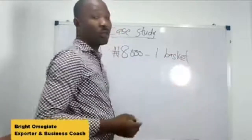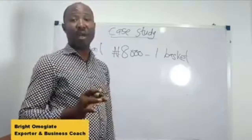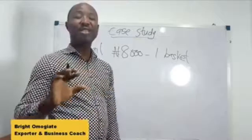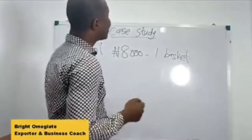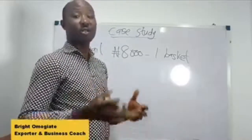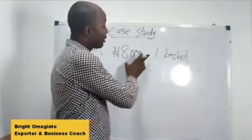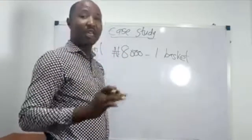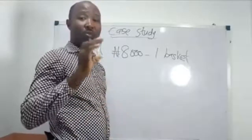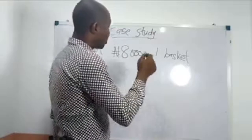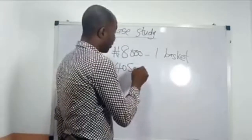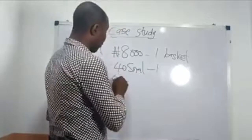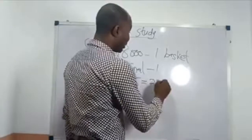Mr. Sonny goes to the market to buy snails. A basket with a minimum of 40 snails is 8,000 naira. Mr. Sonny wants one crate, and a crate is composed of 200 average-size snails. So what Mr. Sonny will do is 40 snails times 5 baskets, which gets 200 pieces of snail for one crate. Snails exported from this country are always shipped in crates, which is why we use that term.